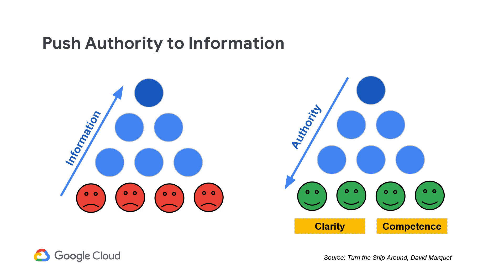An alternative is pushing authority to the information. The foundation for this model is making sure that the people closest to the information are both technically competent and have organizational clarity. They understand the priorities and know what the right thing to do is. They are empowered to make the decisions, and as a result, they are happier for it.